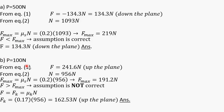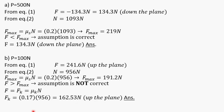For Part B, we follow the same procedure as Part A — apply Equations 1 and 2 to find F and N, then find F_max and check our assumption. We find that the frictional force obtained from the equations of equilibrium is greater than F_max, which is impossible. This means our assumption is not correct, and the actual frictional force must be calculated from F_k = μ_k × N. We found this value, directed up the incline. Thank you.